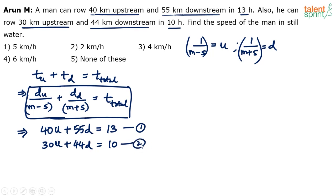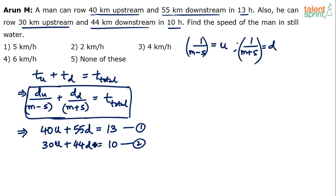Now we have two equations and two unknowns. Once we solve for u and d, we can get m − s and m + s, then solve for m and s respectively. Let's try to eliminate u.